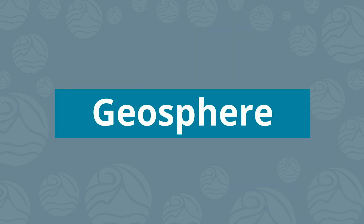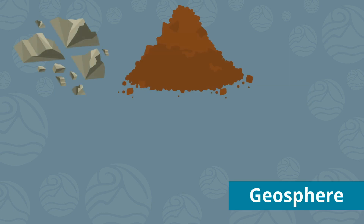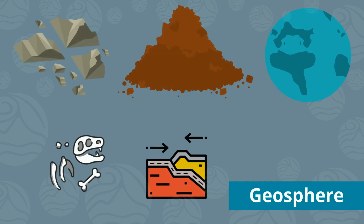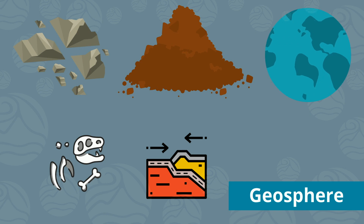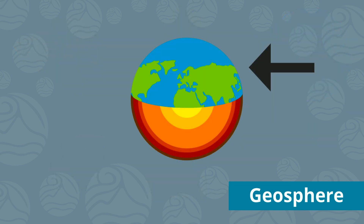The land system is called the geosphere. Within the geosphere are rocks, soil, continents, fossils, and tectonic plates. The geosphere is composed of features at the earth's surface as well as everything below, including the earth's core.